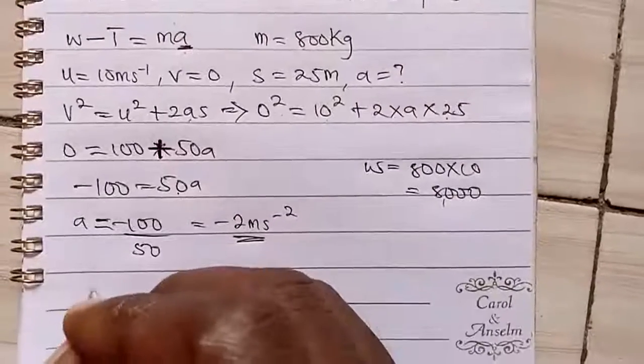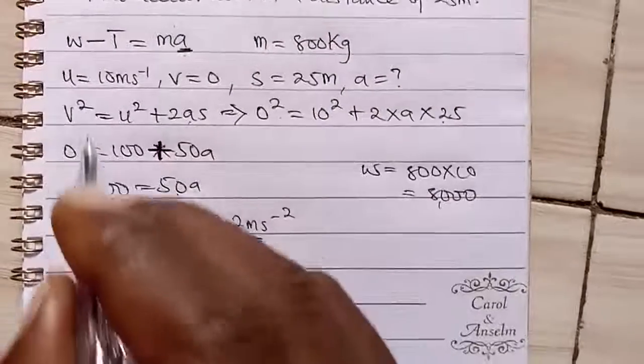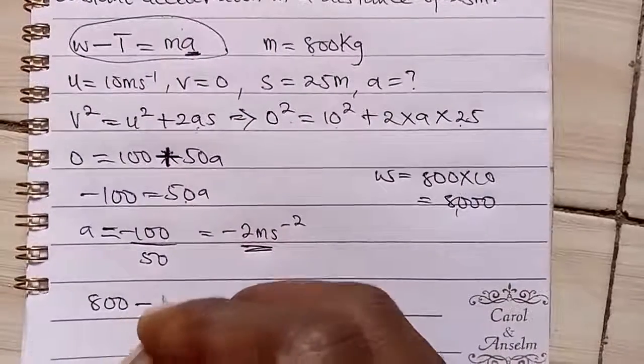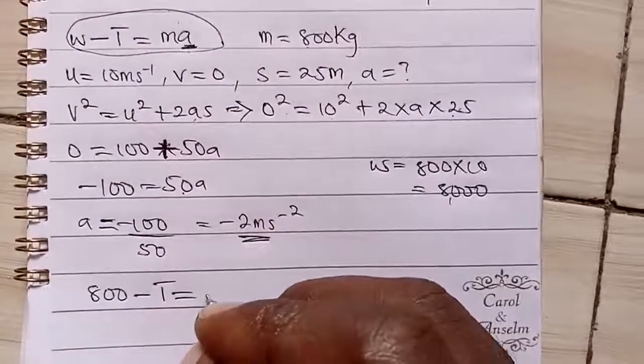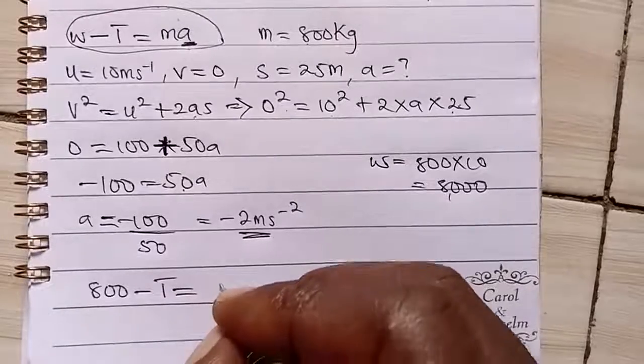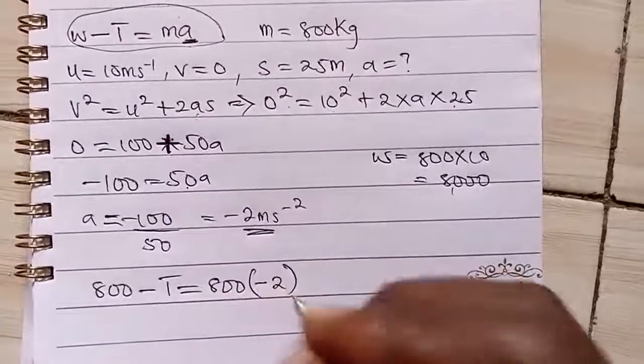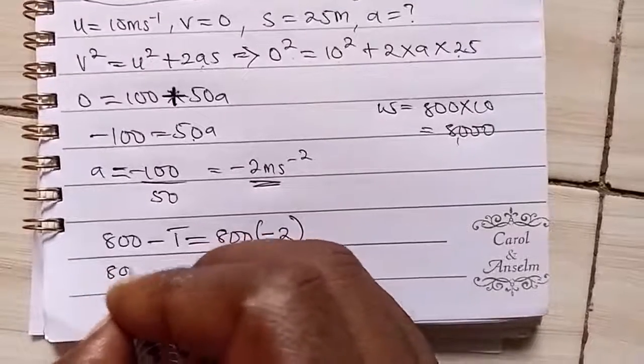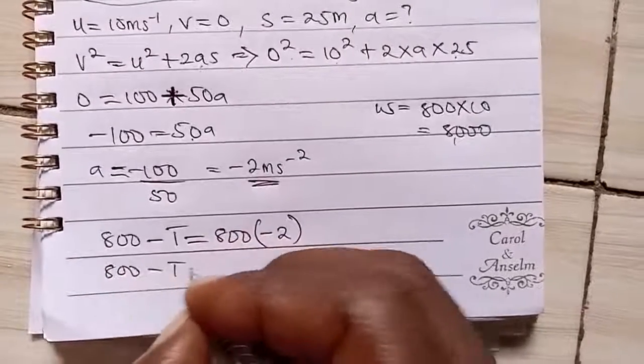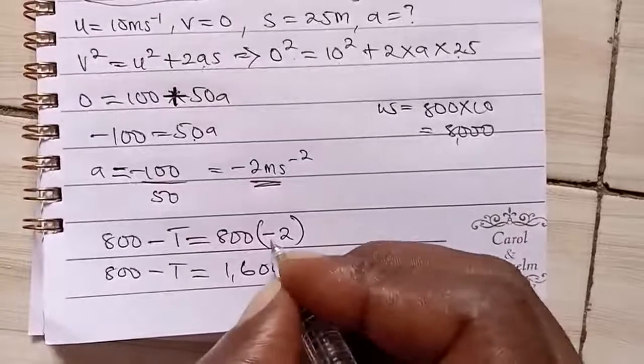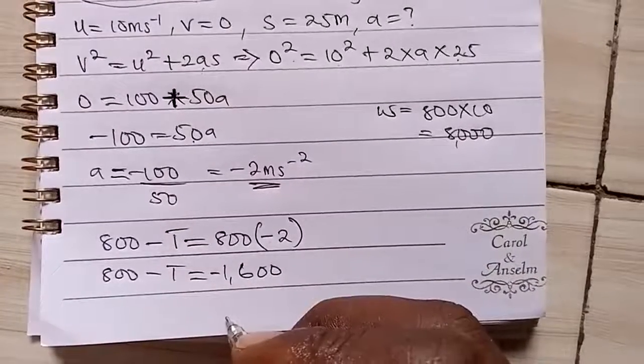So this is our W. So we write it 8,000 for this equation. 8,000 minus T is equal to m, which is the mass is 800 times acceleration, which is minus 2. So we have that 8,000 minus T is equal to, if you multiply this, you have 1,600. Because of the minus, it becomes minus 1,600.